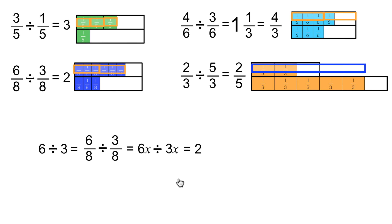In fact, 6 divided by 3 yields the same answer as 6 and 1/8 divided by 3 and 1/8 — and yields the same answer as 6 of anything divided by 3 of those same things, all being equal to 2. So by looking at our fractions in terms of their unit fraction, the division becomes as simple as dividing whole numbers. Now let's take a look at some questions when we don't have common denominators.